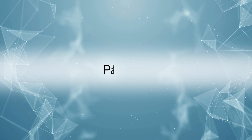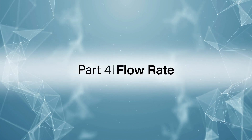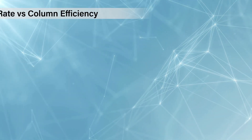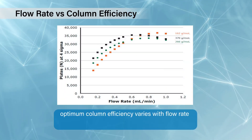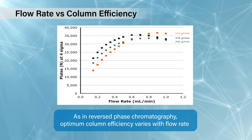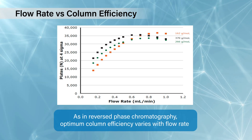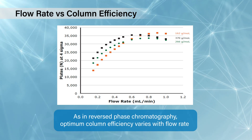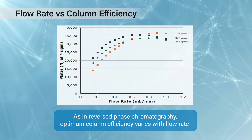The next parameter is flow rate. This is going to be a compromise between the speed of analysis and the separation efficiency. As with reverse phase chromatography, the optimum column efficiency varies with the flow rate — you can generate van Deemter curves. So it is important to consider this.